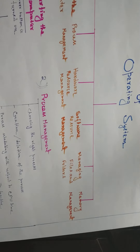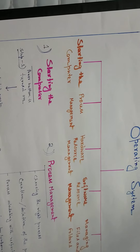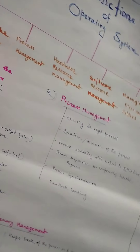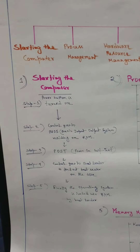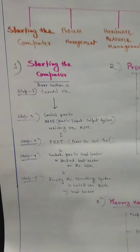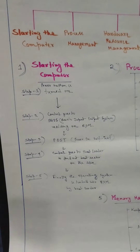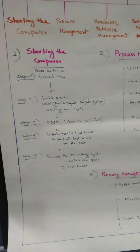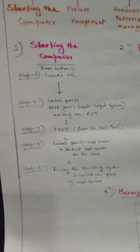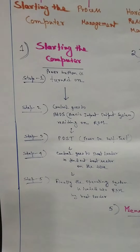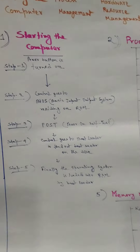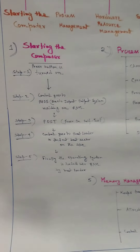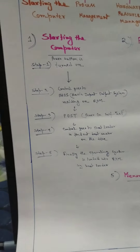I will discuss here the first one — starting the computer. Operating system helps in starting the computer. You know what is operating system: it is the system software that acts as an intermediary between the computer hardware and the computer user. Operating system is the backbone of the software system in a computer. If you have to run any software, you first have to install the operating system, as every software needs the operating system to work properly.